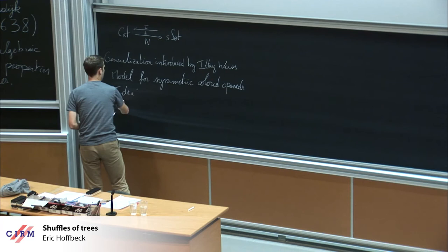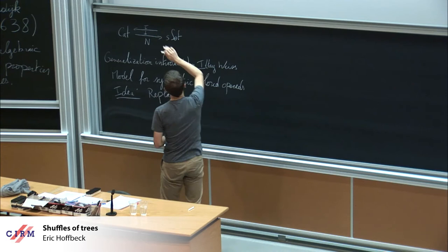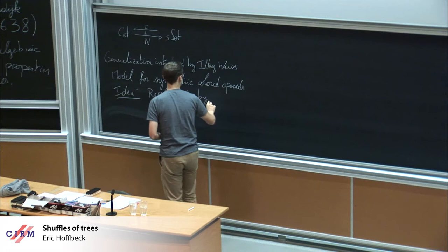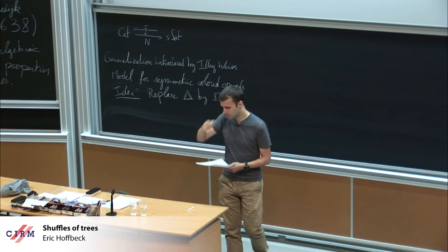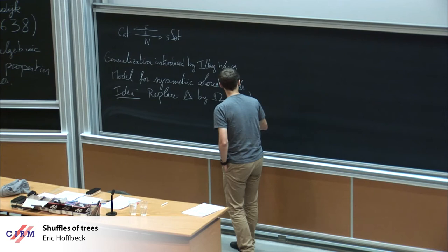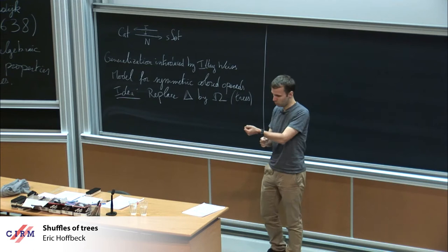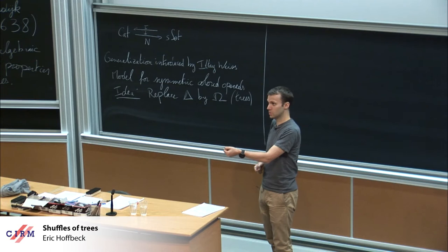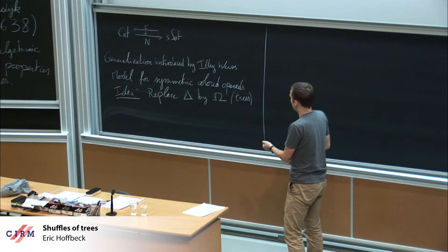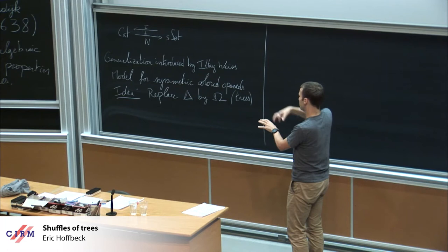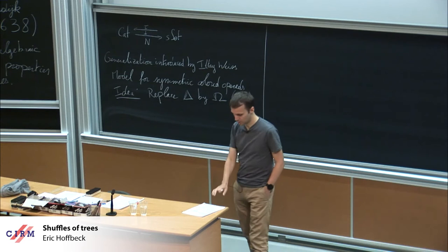The idea: you just replace the category delta by another category — a category of trees, called omega. This is a category of trees. As we said before, for categories you have morphisms with just one source and one output, so when you compose morphisms in a row you just get something linear. But when you have the possibility of many inputs and just one output, when you want to compose them, what appears are trees. So that's why trees appear in this context.